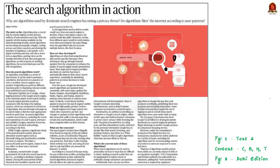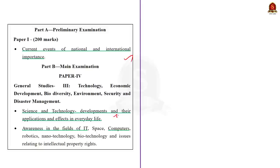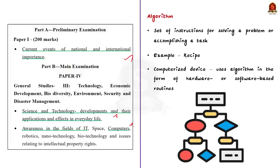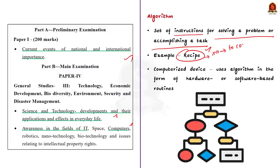This text and context article is about algorithms used by search engines, covering their working mechanism, how they are developed, and the concerns revolving around them. An algorithm is a set of instructions for solving a problem or accomplishing a task. A common example is a recipe, which consists of specific instructions for preparing a dish. Every computerized device uses algorithms to perform its functions in the form of hardware or software-based routines. Search engines use a number of algorithms to perform different functions before displaying relevant results to an individual's search request — for example, before displaying the meaning of a word, the search engine uses multiple algorithms to perform certain functions.